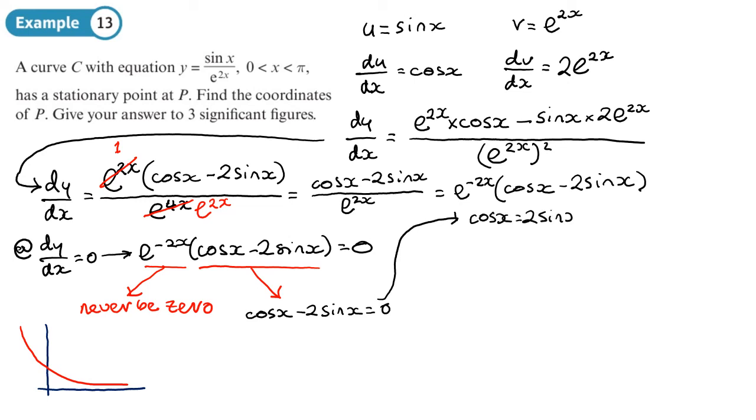That means that cos x equals 2 sin x. If we divide both sides by cos x, we'll get 2 tan x equals 1, which then means that tan x equals a half.